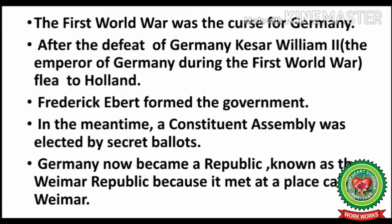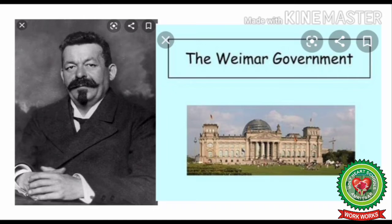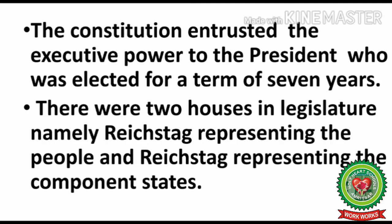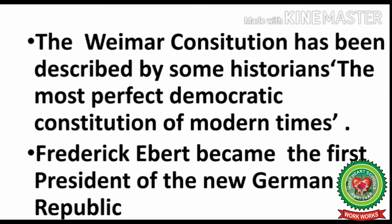On your screen you can see the picture of Frederick Ebert, who was the first-ever republican president of Germany after the First World War. The Weimar constitution entrusted executive powers to the president, elected for a term of seven years. There were two houses in the legislature: the Reichstag representing the people and the Reichsrat representing the component states. Frederick Ebert became the first president of the new German Republic.